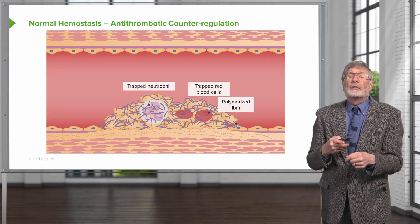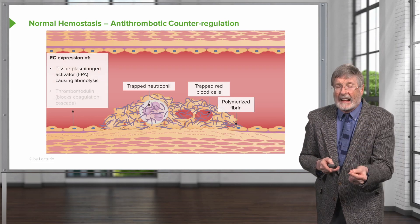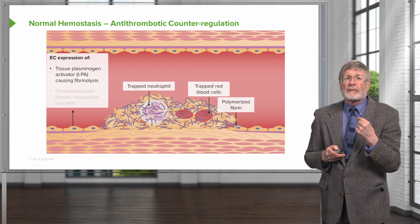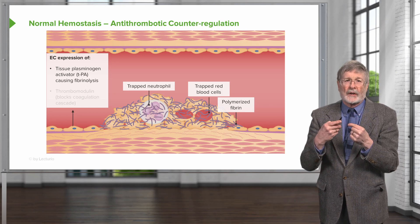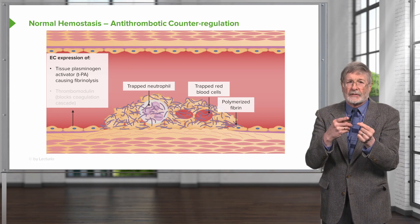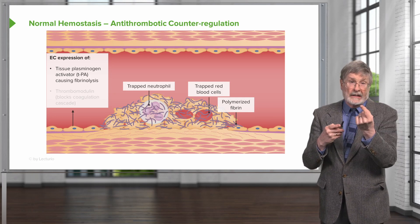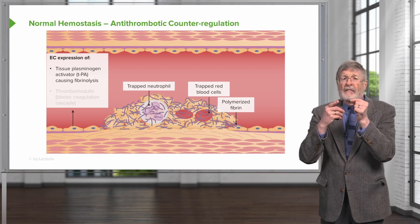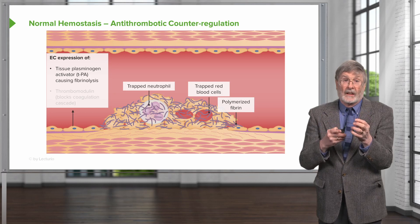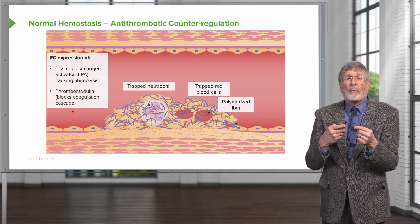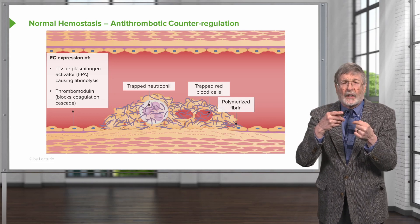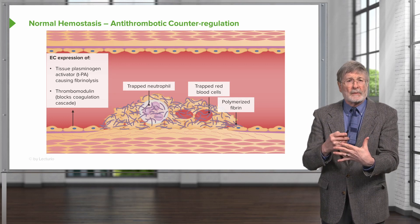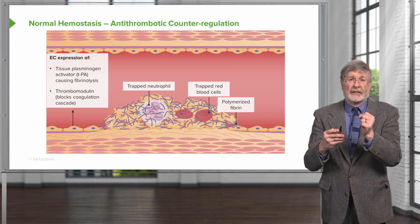The trapping of neutrophils is just the beginning. Endothelial cells, coming into the game, are going to express a number of factors that are counter-regulatory to the thrombotic process. Endothelial cells will express tissue plasminogen activator (TPA), which will cause the breakdown of the polymerized fibrin. They're also going to make thrombomodulin, which will block an early step in the coagulation cascade. So we're already beginning to limit the degree of thrombosis even as we're thrombosing an injured vessel.